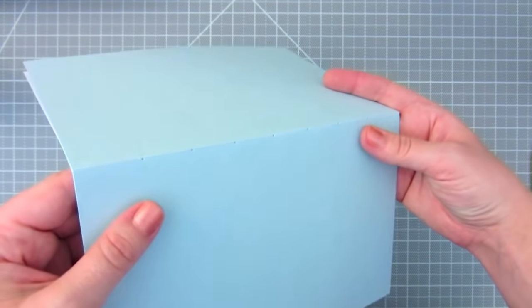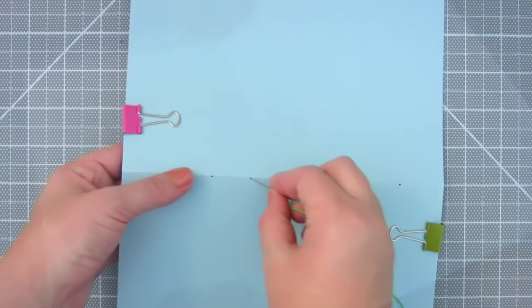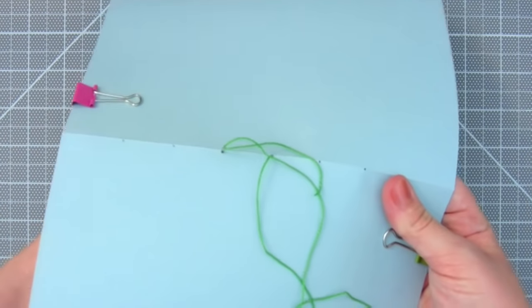For books with less pages and thin covers, it's fine to fold the center beforehand. Then follow the same sewing method to bind it.